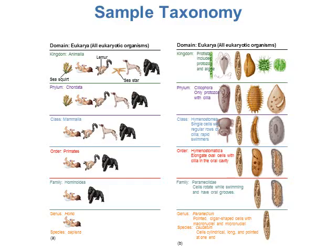That kingdom is divided into different phylums. One phylum is chordata. That phylum is divided into classes — we have the mammal class. That's divided into orders, so we have primates. Then divided into families, and then we get to the genus and specific species, so you get down to one species at the very end.